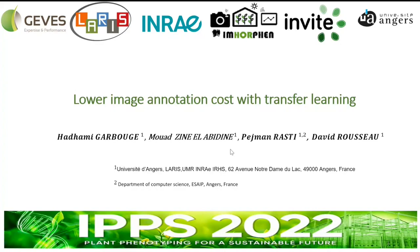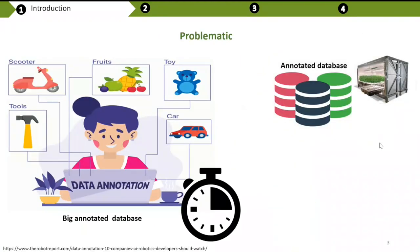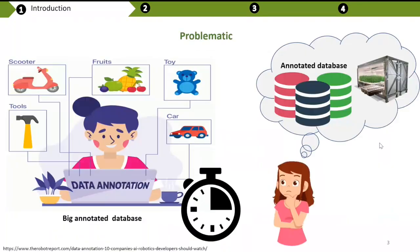This work is about low-cost image annotation with transfer learning. Moving from traditional machine learning methods to deep learning offers automatic feature extraction and more robustness, but this method needs a lot of annotated datasets, which is a very time-consuming task.